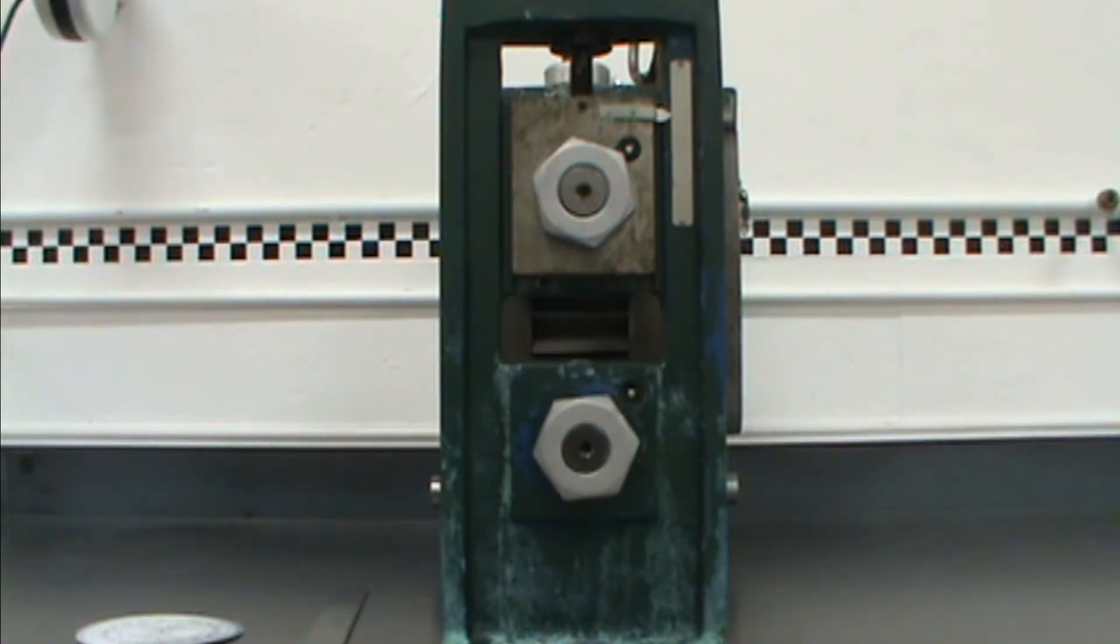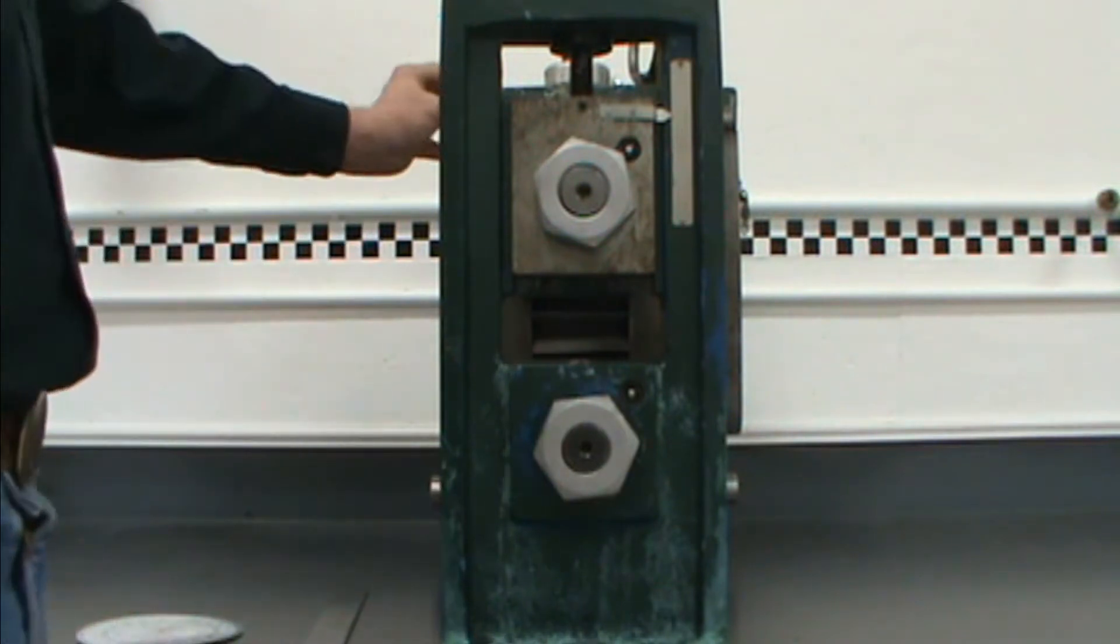To determine the gear ratio of the gearbox, again if you have prints, see if that information is on there. If you don't have prints, see if it's stamped on the housing.